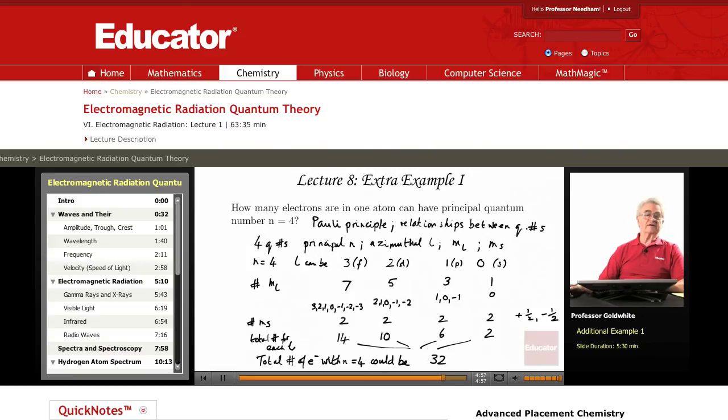Of course, in any given atom we may not have that many electrons, but this is the possible number of electrons with principal quantum number 4. This problem is a good test of whether you understand, as we said right at the beginning, the relationships among the different quantum numbers and the meaning of the Pauli exclusion principle, which is no two electrons in any one atom can have the same set of all four quantum numbers.